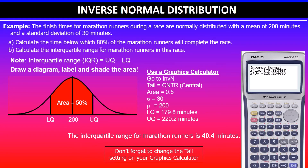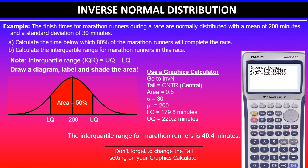Do not forget to change the tail settings on the graphics calculator. You have three options: tail left, tail right, or central. Central works here because there is 25% on either side of the mean. Alternatively, you could use tail left with area 0.25 to find the lower quartile, and tail right with area 0.25 to find the upper quartile. Or keep tail left with area 0.25 for the lower quartile and area 0.75 for the upper quartile. Either way, you get the same result.